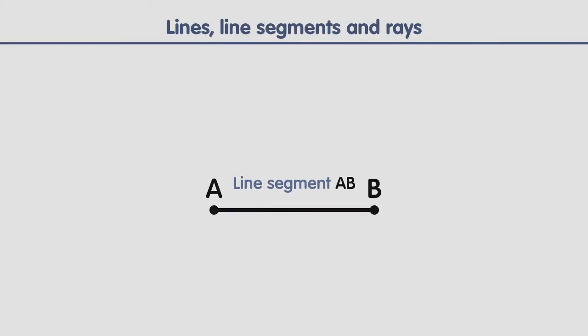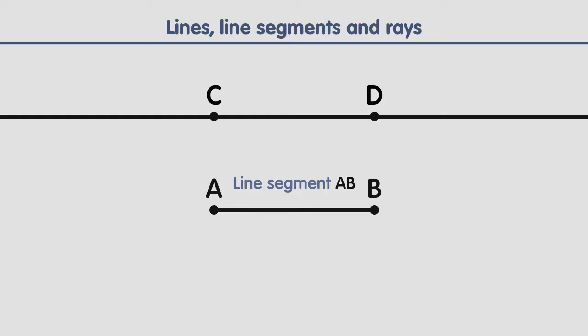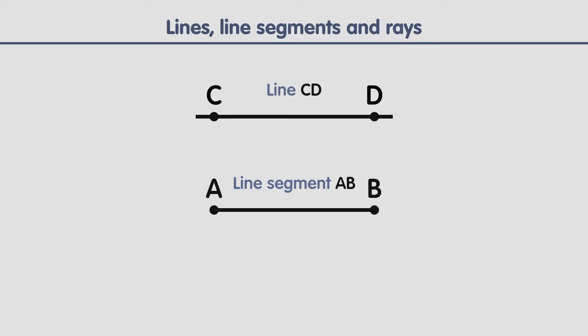Now imagine that we draw another two points — point C and point D — and we join them, creating a line segment C-D. But now imagine that we extend this line segment forever in both directions. Well, this is not a line segment anymore. Instead, we have a line. A line is a straight path that extends forever in both directions with no endpoints. But since we can't actually draw a line that goes on forever, what we do is draw an arrowhead on both ends of the line to show that it keeps on going.